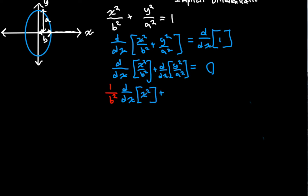So we can say that this is 1 over B squared times the derivative with respect to X of X squared. And then we are adding, I'm going to do the same thing, 1 over A squared times the derivative with respect to X of Y squared.